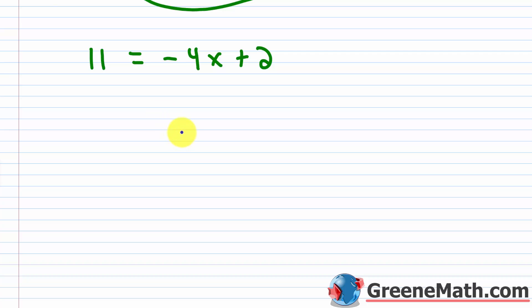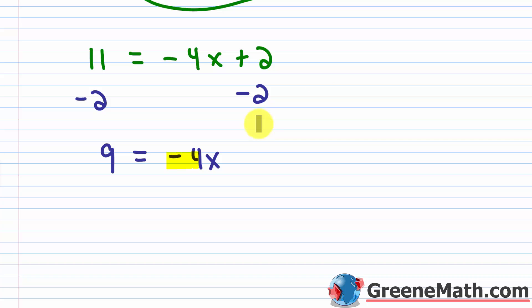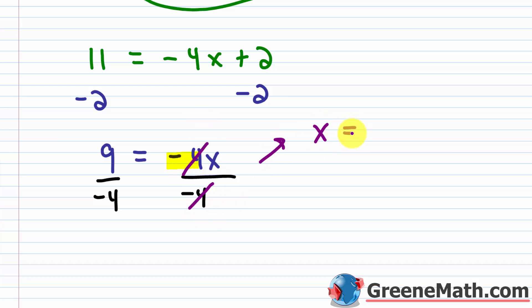I'm going to subtract 2 away from both sides. So I'll have 11 minus 2, which is positive 9. So 9 is equal to negative 4x. To get x by itself, I have this negative 4 multiplying x, so let's divide both sides by negative 4. This cancels, and x is equal to 9 over negative 4, which is negative 9 fourths. Now, when you work with logarithmic equations, you always want to check your solutions and make sure they're valid in the original equation. A lot of times you're going to get solutions that violate the domain and you've got to reject those. I'm going to tell you in advance this one does work out, but you'll see some in this lesson that don't.